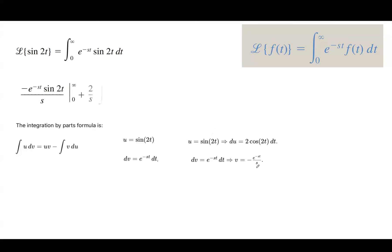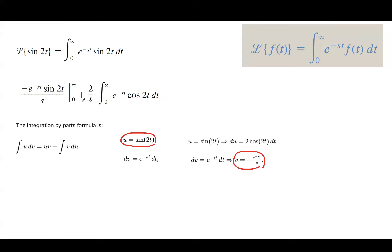Now let us follow the formula: uv minus the integral of v du. You multiply u and v, giving sine of 2t times negative e to the power negative st divided by s, plus the integral of e to the power negative st cosine 2t. Note that this plus sign comes from the second negative sign. As you can see, you have another integral that requires another application of integration by parts.